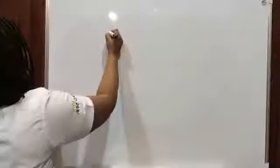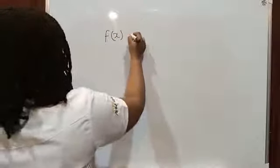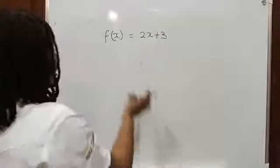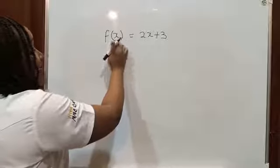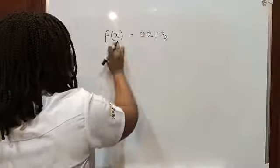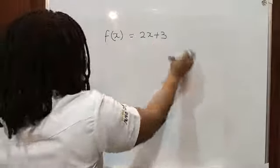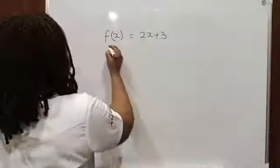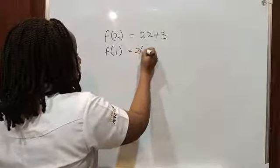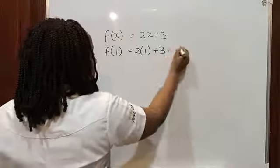Now let's take for example, you have a function of x equals 2x plus 3. What it means is that for any value of x, you plug it into this equation or into this expression and get your value. Take for example, where x equals 1. So our function of x becomes 2(1) plus 3, which gives us 2 plus 3, which gives us 5.